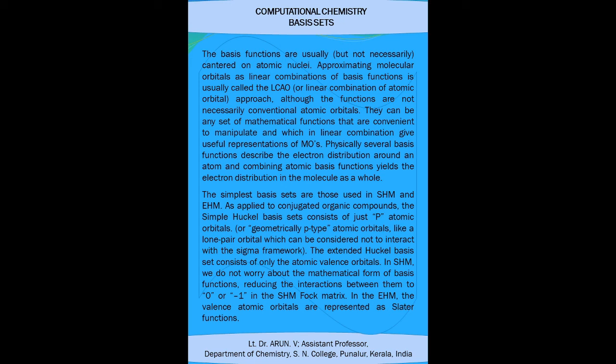In the simple Hückel method, we do not worry about the mathematical form of the basis functions, because on reducing the mathematical wave functions, we finally get the values as 0 and -1 in constructing the default matrix. In the case of the extended Hückel method, the valence atomic orbitals are represented as Slater functions.